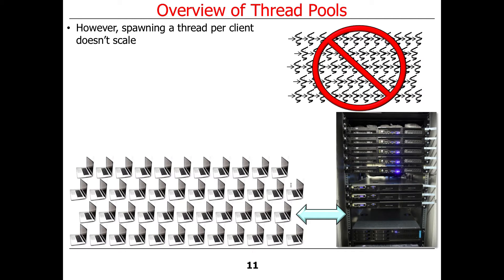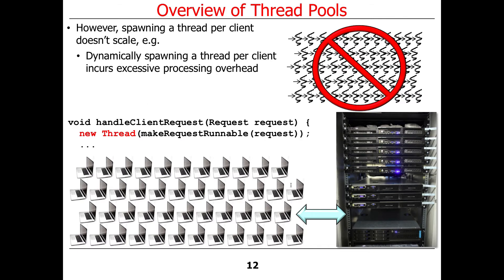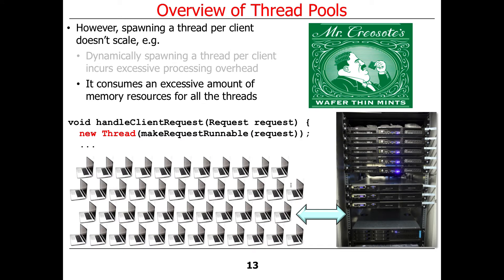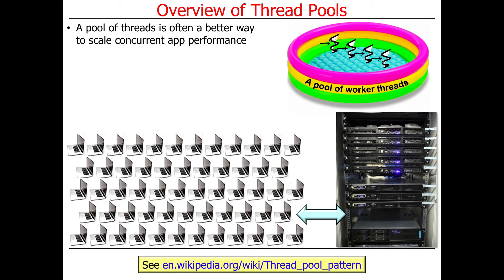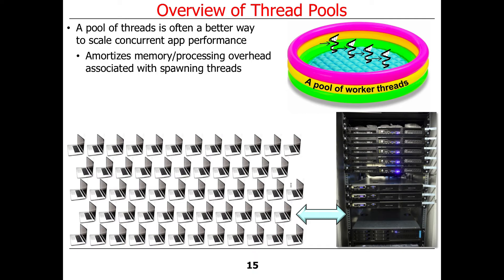Spawning a thread for each client doesn't really scale. You'll end up with an unbelievably large number of threads. The reason it doesn't scale is because you end up having lots of overhead to keep track of all the threads, and it ends up consuming enormous amounts of memory. Each thread typically uses about a megabyte worth of virtual memory, which starts to become a problem. So you'll typically run out of threads if you make a new thread for each client request. A better way to do things is often to have a pool of threads, which allows you to scale up performance better. It amortizes the memory and processing overhead associated with spawning a thread for each request.